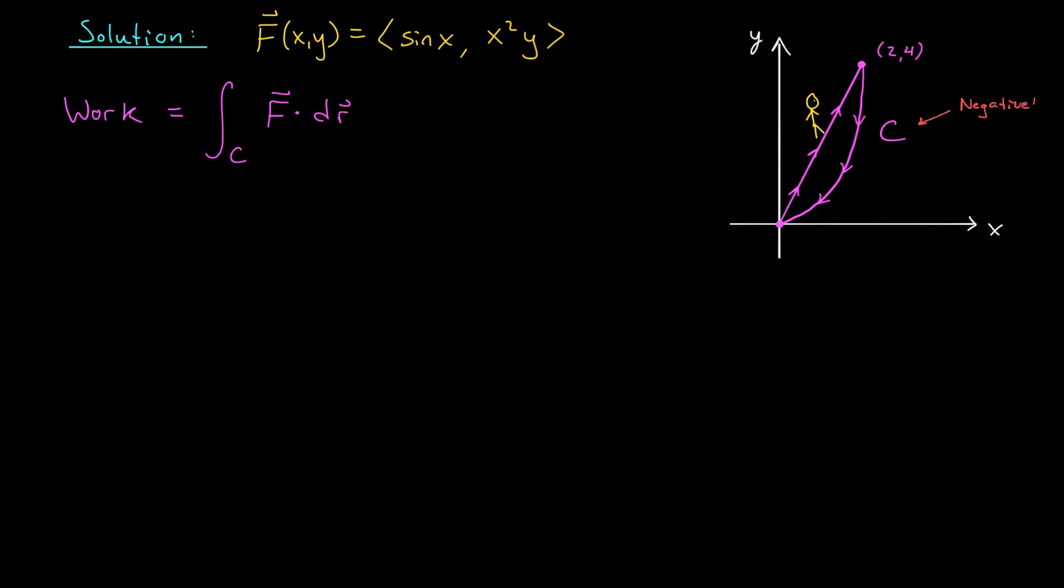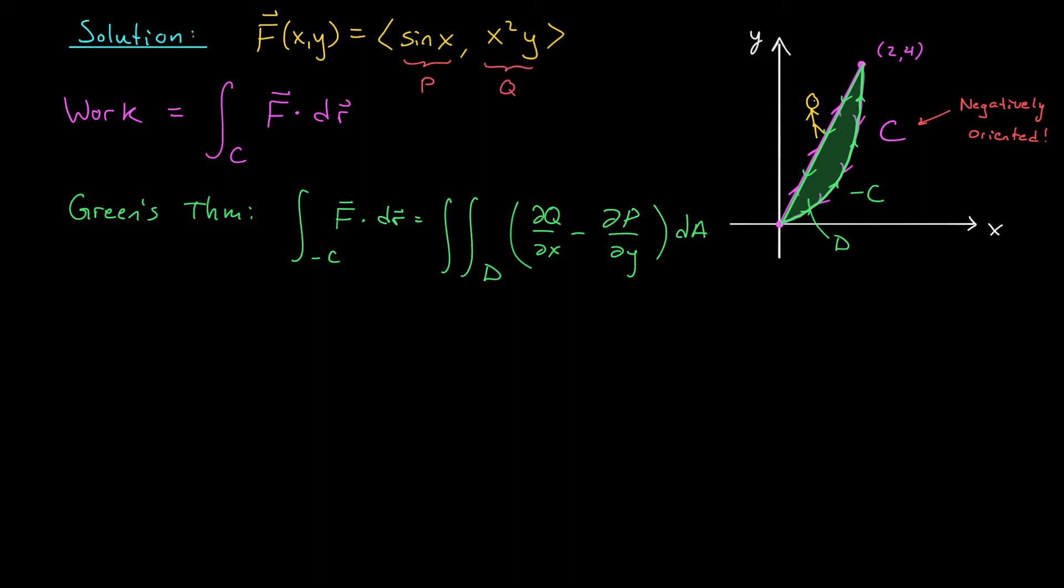So while we can't use Green's theorem to compute the line integral along C, we could use Green's theorem to compute the line integral along -C, the curve moving in the opposite direction. So let's compute that line integral with Green's theorem, and we'll touch up our answer at the end. By Green's theorem, the line integral along -C of F·dr is the same as the double integral over the region D of ∂Q/∂x - ∂P/∂y dA, where P is this first function, sin x, and Q is the second function, x²y.